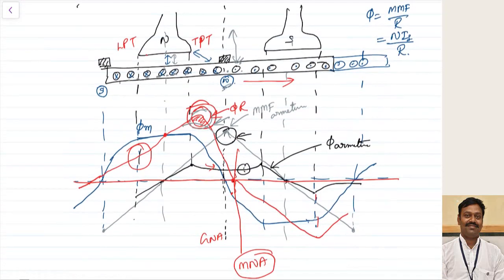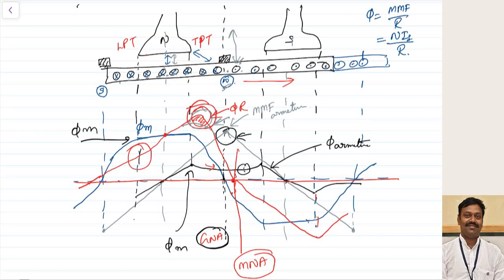Because of armature reaction, there are two fluxes available: one due to the main field flux and the second due to the armature flux, from the armature MMF wave caused by current in the armature conductors. As a result, the net flux does not become zero at the geometrical neutral axis or brush axis, and the EMF is not zero for the conductor under the brush.